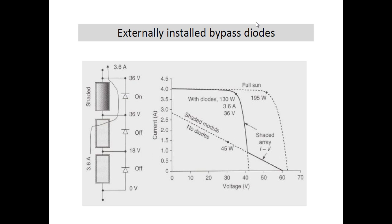Considering a practical module comprising 18V each, this is the characteristic and the dropping of characteristics — characteristic at full cell, characteristic at shaded cells with diode and without diode. There is a clear reduction in output in the shaded-without-diode case.